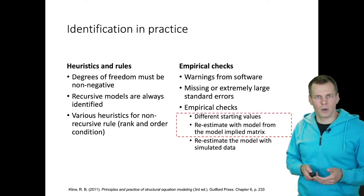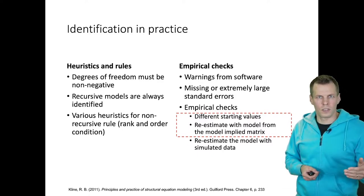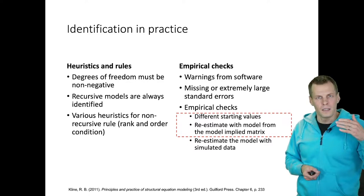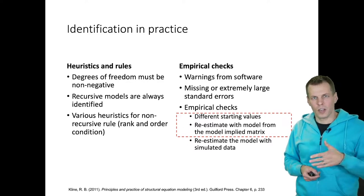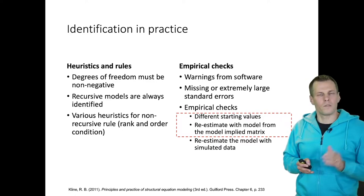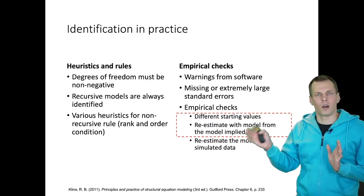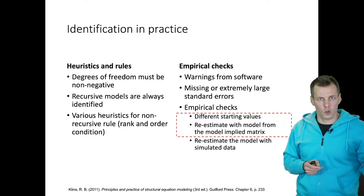Estimating the same model from two different starting values. The idea is that if a model is identified and if you get convergence, then you should get the same result regardless of your starting values. If it's not identified, then you might get different results. So try different starting values. If you get the same result, then you have identification. If you don't, then it's not identified for sure.